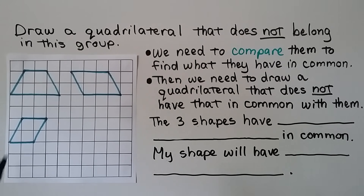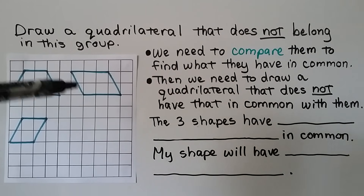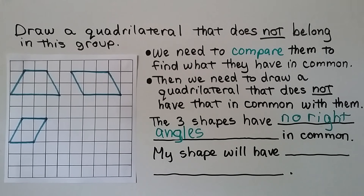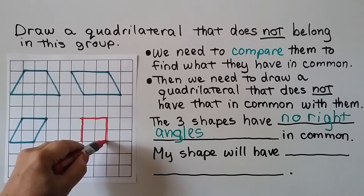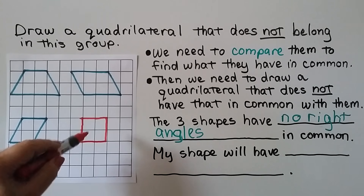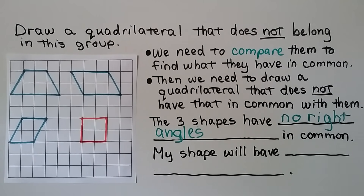Now we need to draw a quadrilateral that does not belong in a given group. We compare the shapes to find what they have in common first. They all have sides that are slanting, which means they don't have any right angles. So what the three shapes have in common is no right angles. We can draw a square, which has right angles — that's different and doesn't belong in this group. We drew a quadrilateral that does not belong.